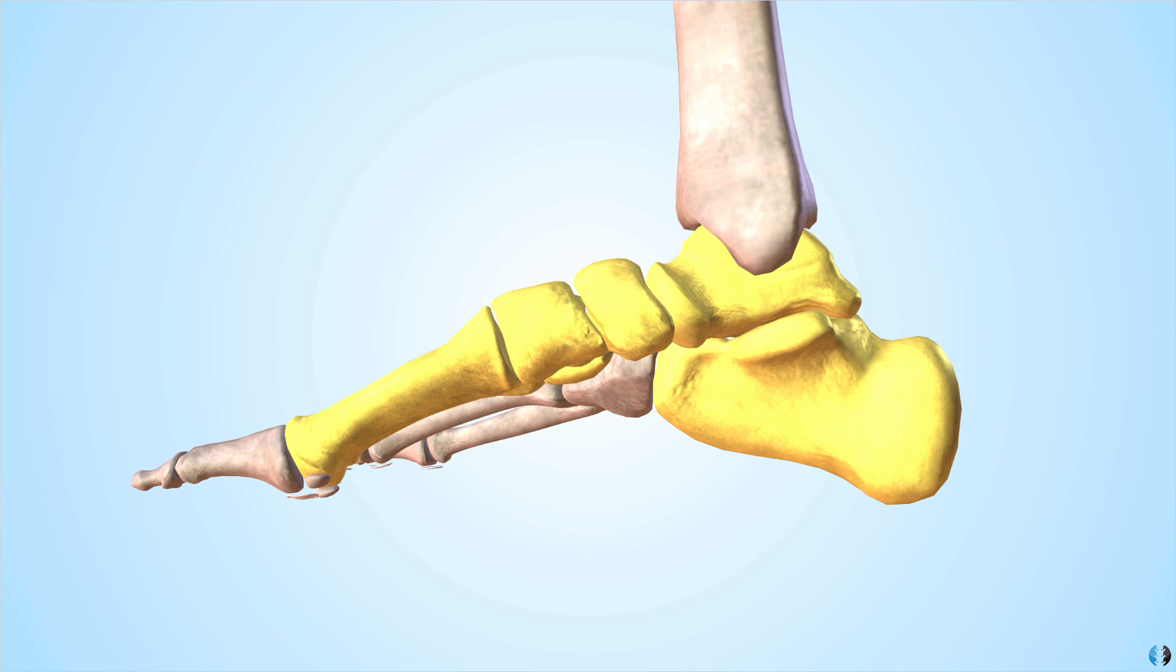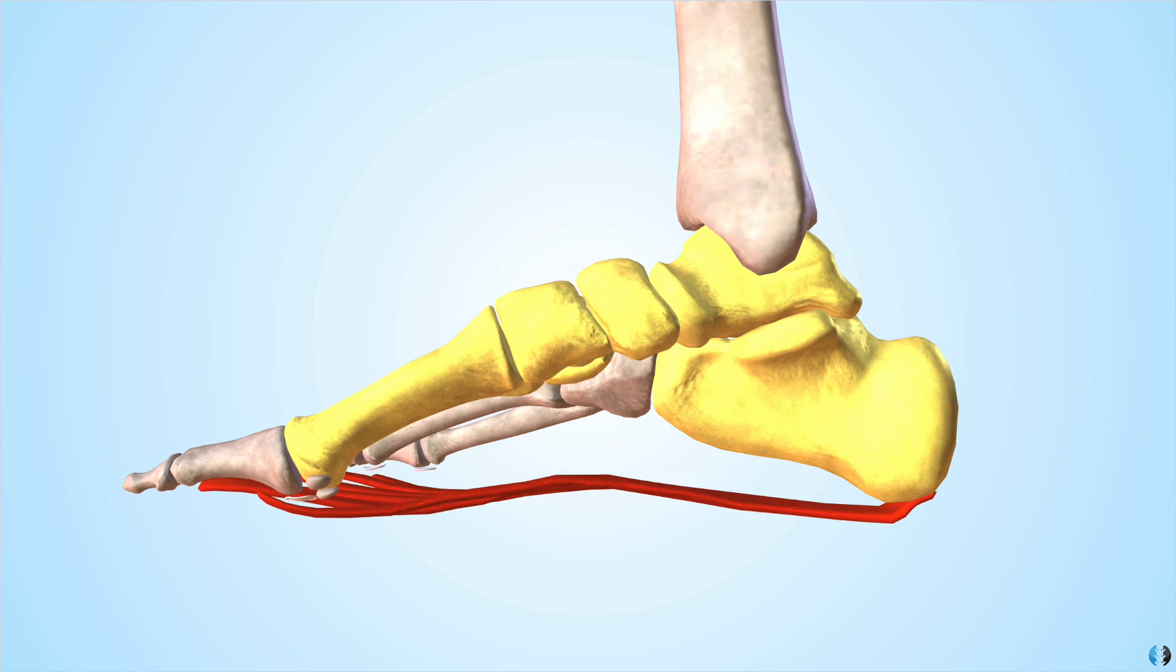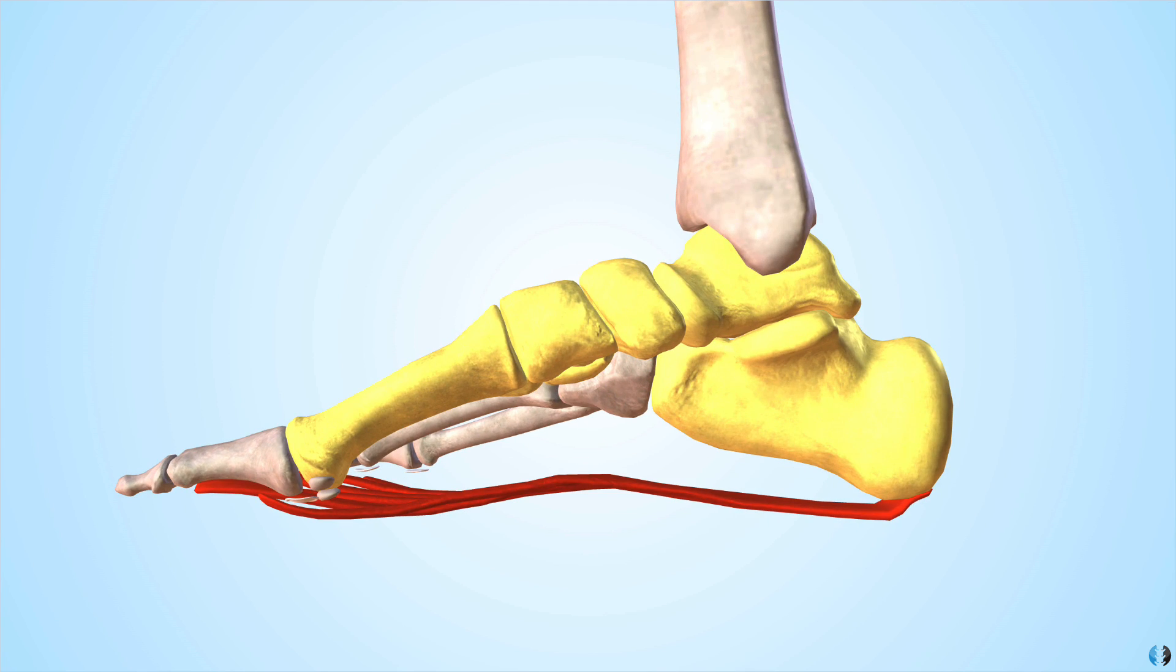So when we walk, our body weight moves down the tibia and down into the foot. This downward force through the tibia would normally flatten the arch created by those bones. And so the key aim of the plantar fascia is to maintain this arch created by these bones, rather than allowing them to flatten towards the floor. And it does this via the windlass mechanism.